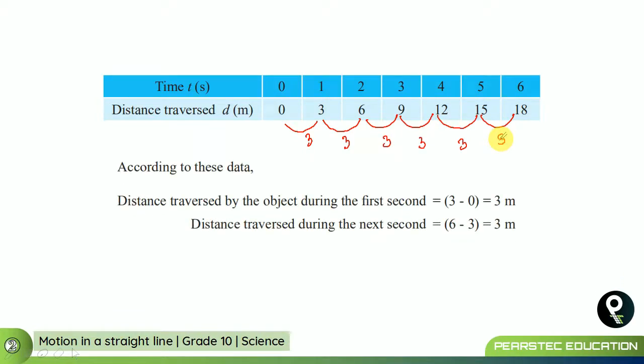Now, according to this data, distance traversed by the object during the first second is 3 minus 0, which is 3. And distance traversed during the next second is 3 meters. And the next is 3 meters. And the next is 3 meters. It goes on like that. Now, that is called uniform or constant speed.